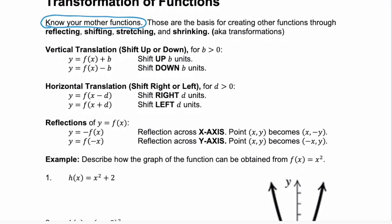The first transformations we're going to look at: a vertical translation, which is just a shift up or down. When it's vertical, you're going to see that translation on the outside of the function — we're adding or subtracting a value b. A horizontal translation, or horizontal shift left or right, happens inside the function. And then we have reflections: a negative on the outside reflects across the x-axis, and when it's inside the function, you reflect across the y-axis.